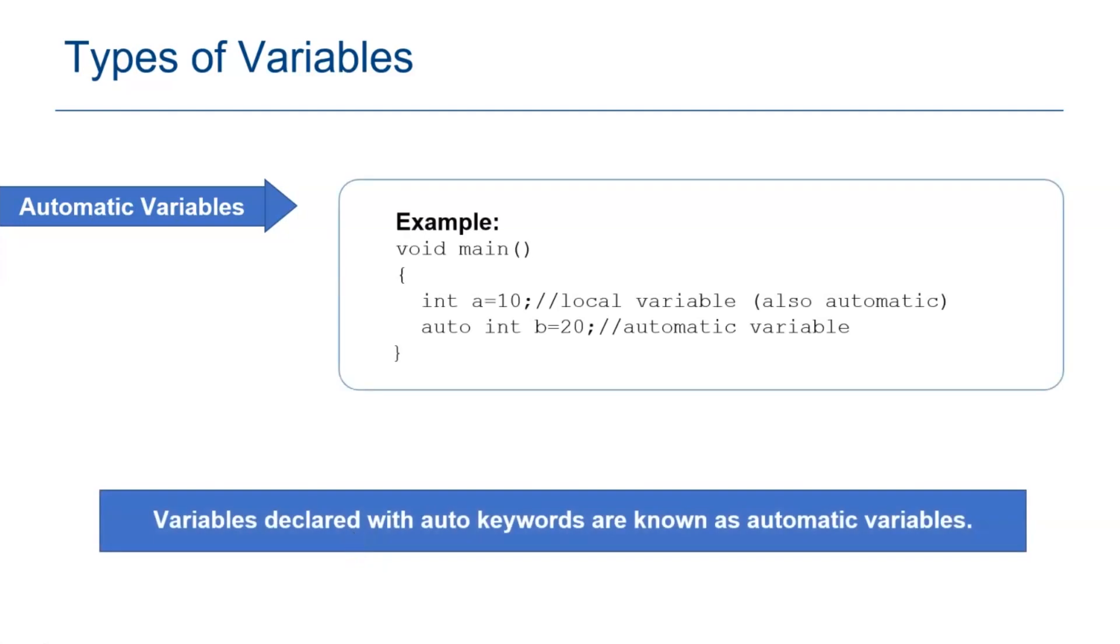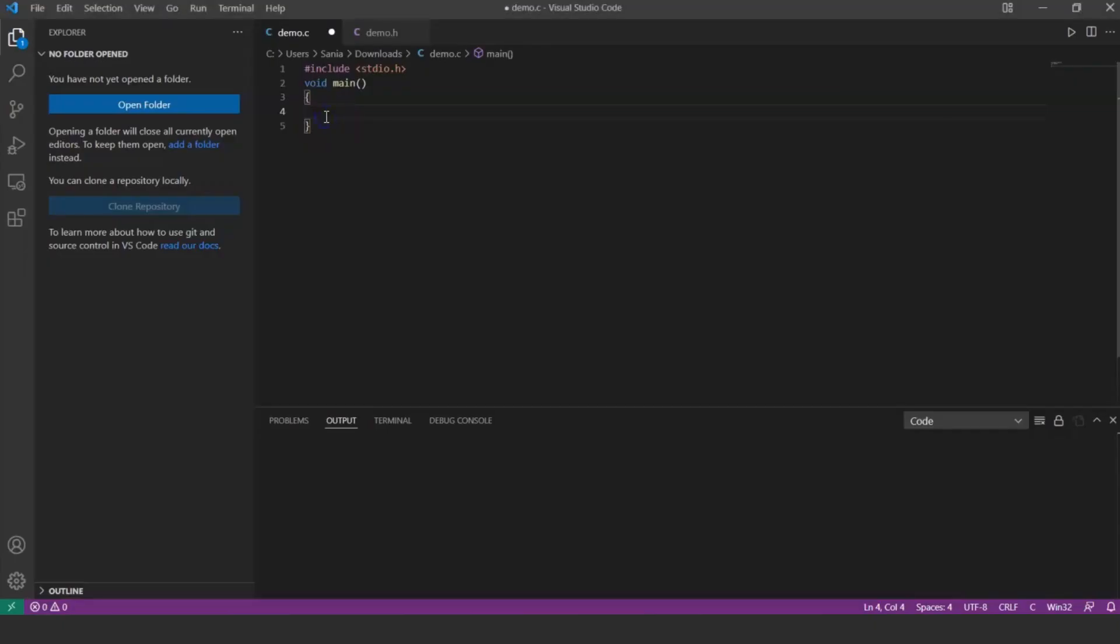Next, variables declared with auto keywords are known as automatic variables. The variables declared inside the block of functions are automatic variables by default. In this example, int a equals 10 is an automatic variable by default. Now let's execute a program using the auto keyword. By default, this is an automatic variable. Let us also declare a variable with auto keyword.